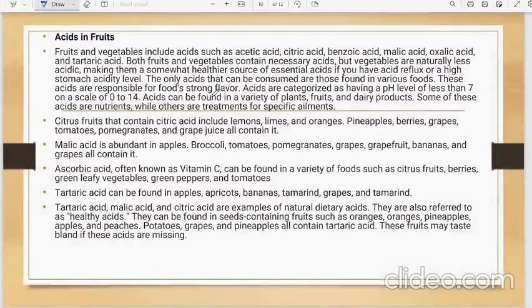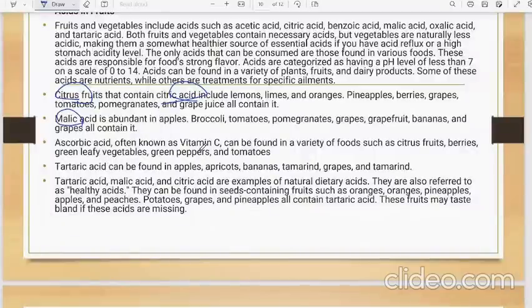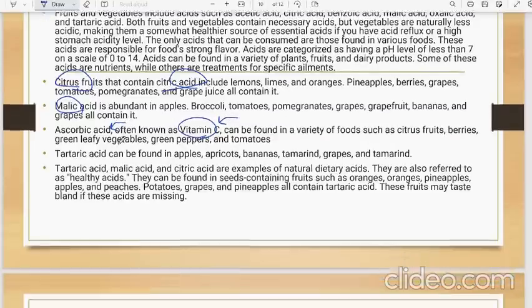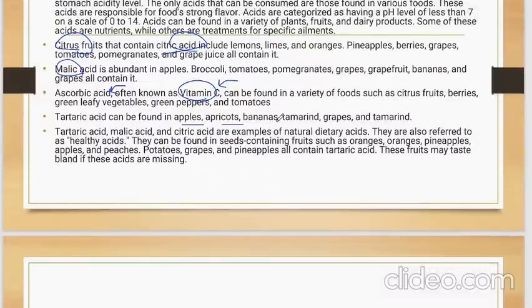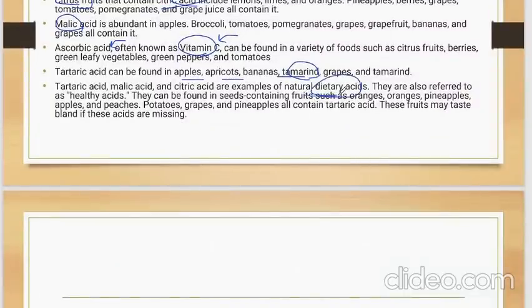Then you have some common acids which are present in your fruits and vegetables. Citric acid contains citric acid. Malic acid is present in apples, tomatoes, pomegranates. Ascorbic acid is also known as vitamin C. So anything that has vitamin C will have ascorbic acid. Tartaric acid can be found in apples, apricots, bananas, tamarind. Tamarind is imli. Tartaric acid, malic acid, and citric acid are all examples of natural dietary acids. They are used to control weight. You might have seen many people recommending eat oranges, or eat tomatoes as your diet. Why do they do so? Because they contain these acids and these are called dietary acids.